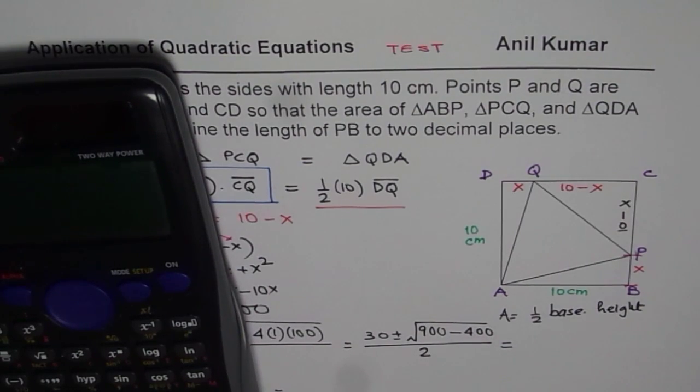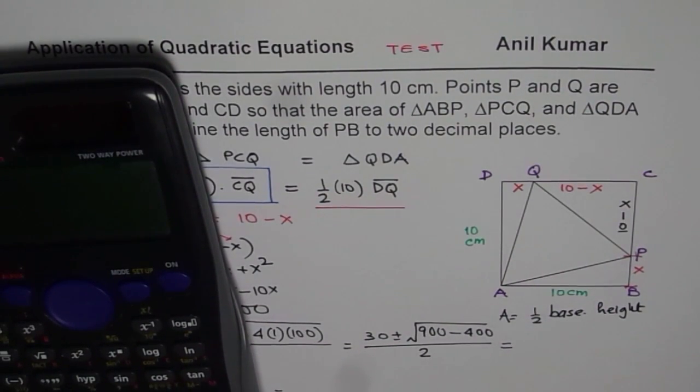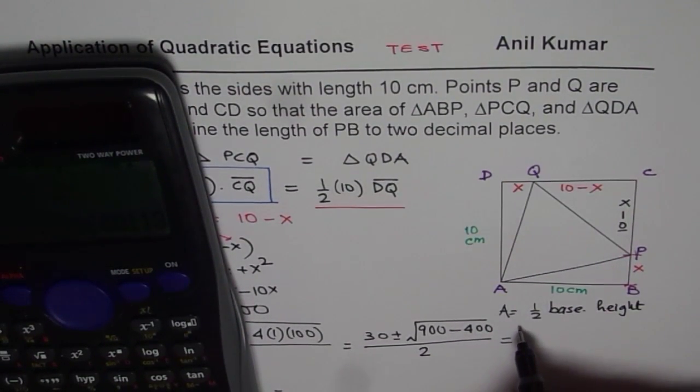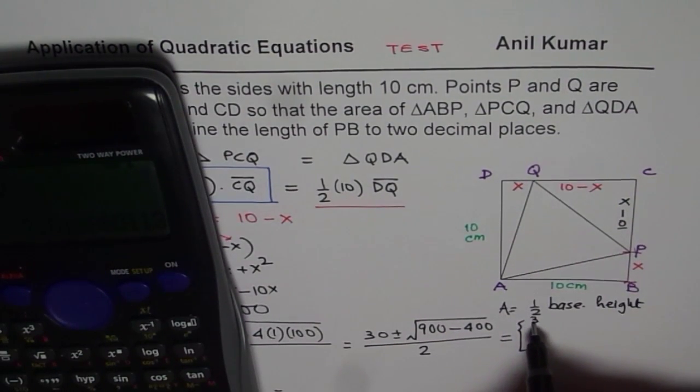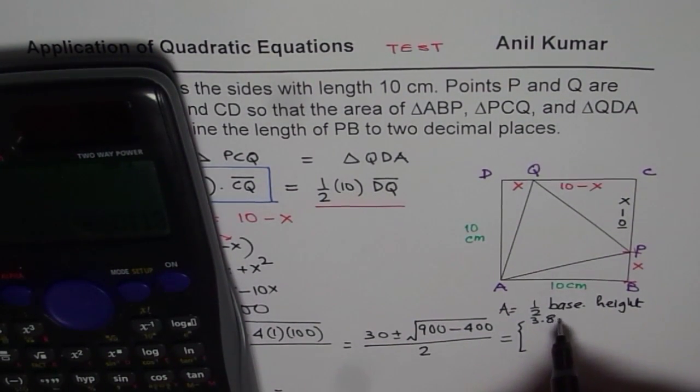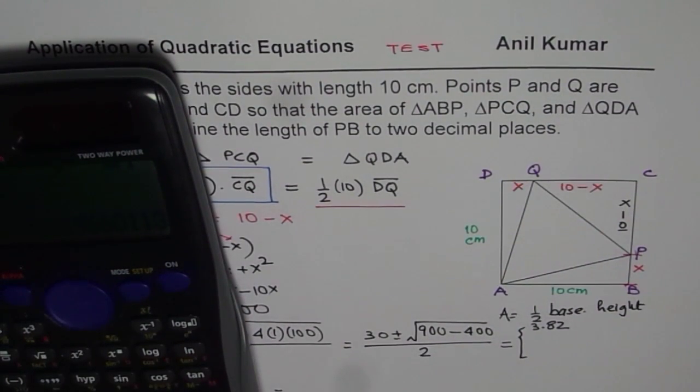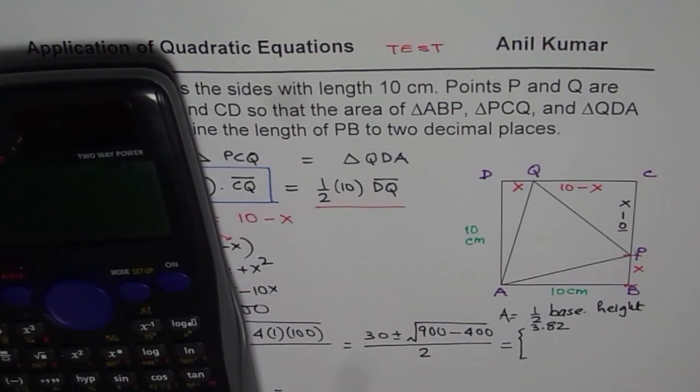So we have 30, let us use minus first, minus square root of 900 minus 400, equals to, divide this by 2, and that is equal to, write it in decimals. So we get one solution as 3.82, it is 3.819, rounding it in two decimal places.